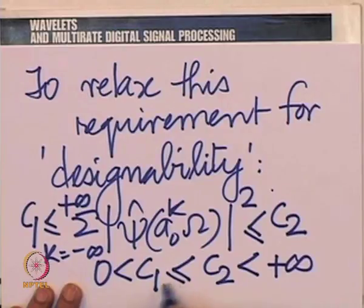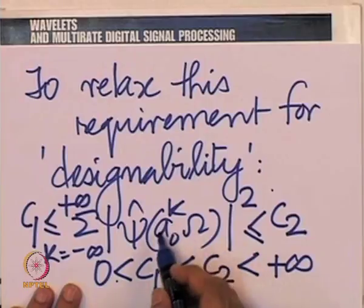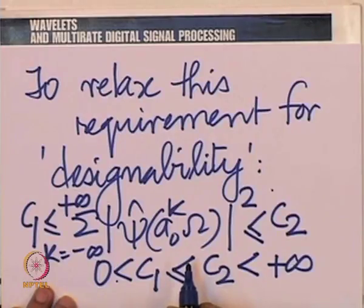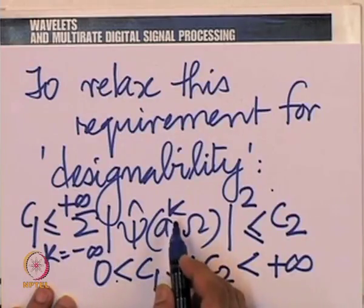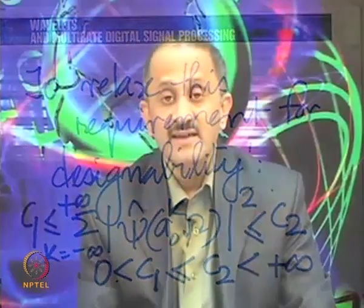So instead of insisting this be a strict constant, we allow it to lie between two constants. If this is the case, can we make a small change to the synthesis filter and still reconstruct? That is the first question we shall answer — and it is easy to see the answer.